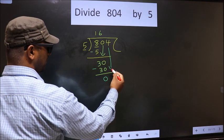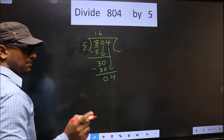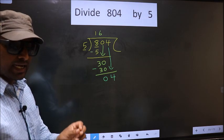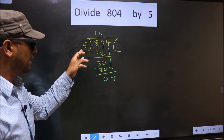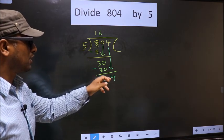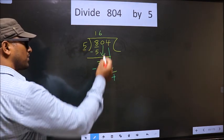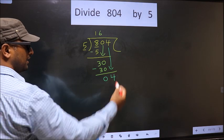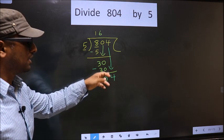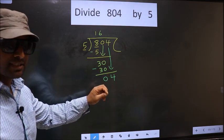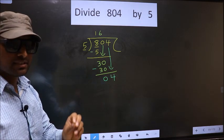Now you bring down the beside number, so 4 down. This is where the mistake happens. The mistake is this: here we have 4, here 5. 4 is smaller than 5. So what many do is, they put a dot and take 0 here, which is wrong.